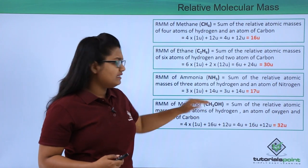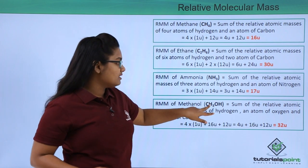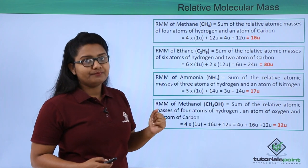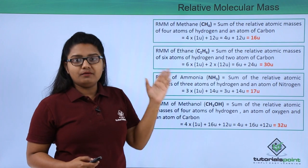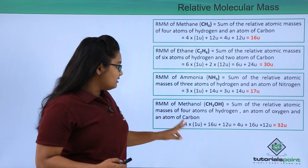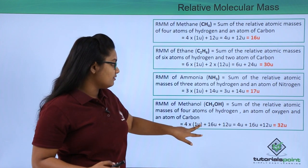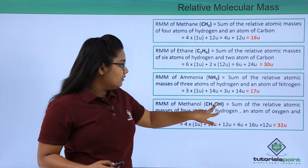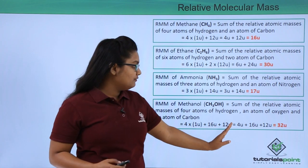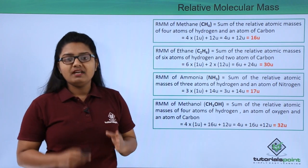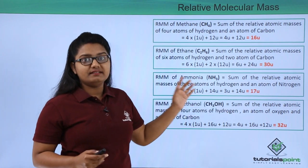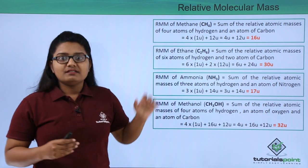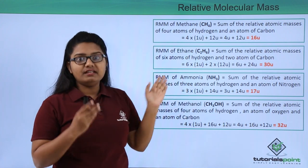A methanol molecule has the formula CH₃OH, which contains one carbon atom, four hydrogen atoms (3 + 1), and one oxygen atom. Adding the masses: 4 × 1u + 12u + 16u = 4u + 12u + 16u = 32u. Therefore, the relative molecular mass of methanol is 32u.